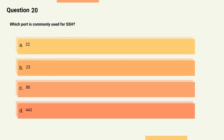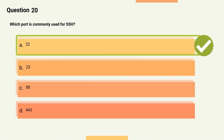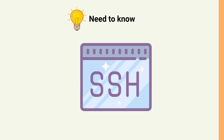Question 20: Which port is commonly used for SSH? Options: A) 22, B) 23, C) 80, D) 443. The correct answer is Option A, 22. Explanation: Port 22 is the default port used by the SSH protocol for secure remote access to a server.